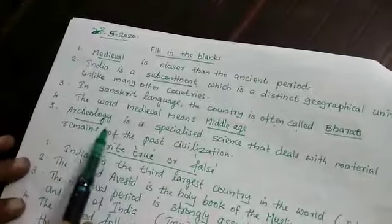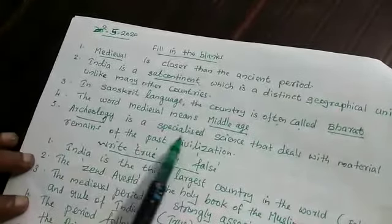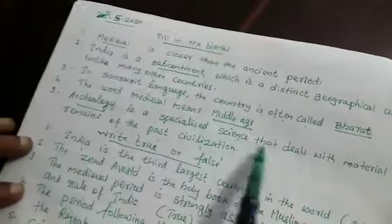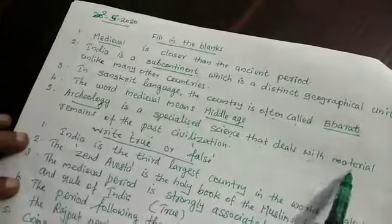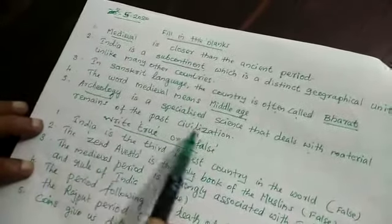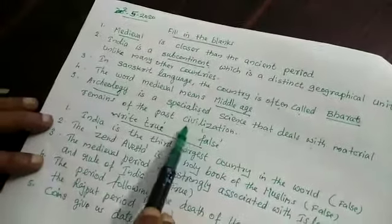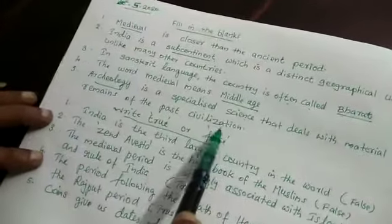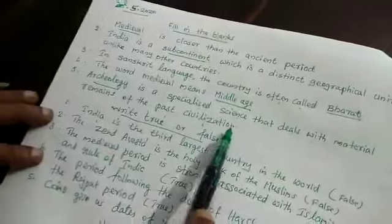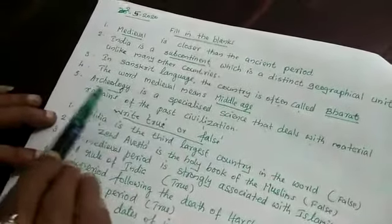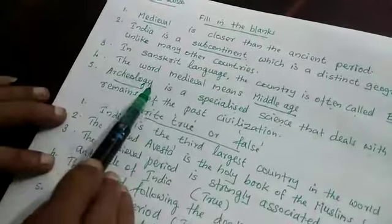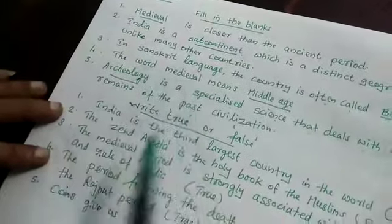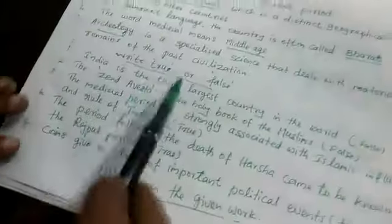Number 5. Dash is a specialized science that deals with material remains of the past civilization. The answer is archaeology — A-R-C-H-E-O-L-O-G-Y, archaeology.